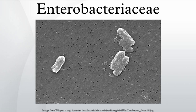Many members of this family are a normal part of the gut flora found in the intestines of humans and other animals, while others are found in water or soil, or are parasites on a variety of different animals and plants. Escherichia coli is one of the most important model organisms, and its genetics and biochemistry have been closely studied. Most members of Enterobacteriaceae have peritrichous type I fimbriae involved in the adhesion of the bacterial cells to their hosts.